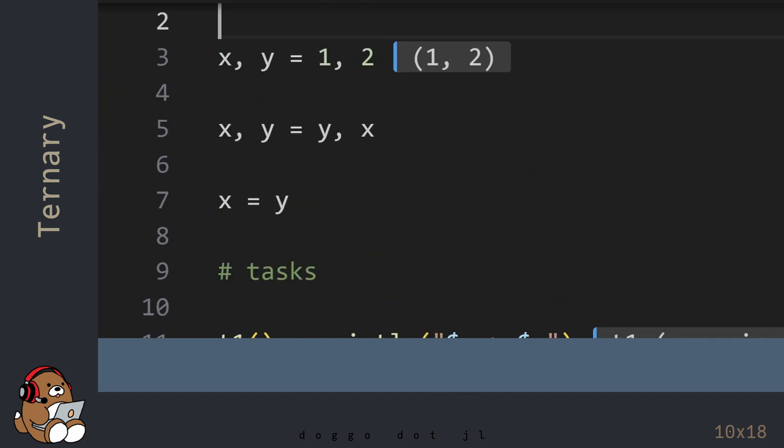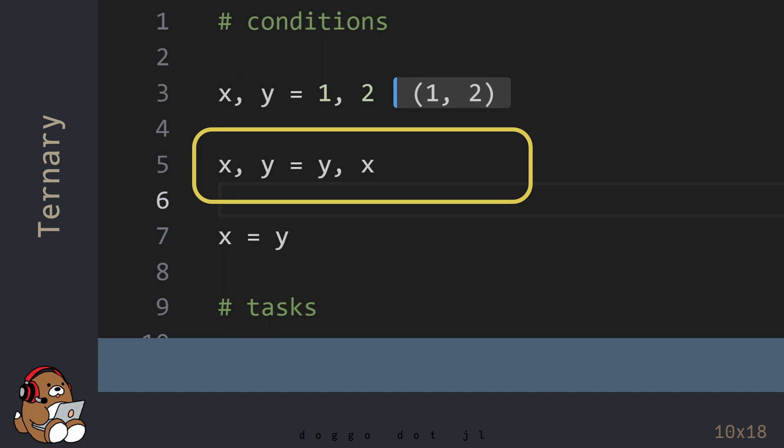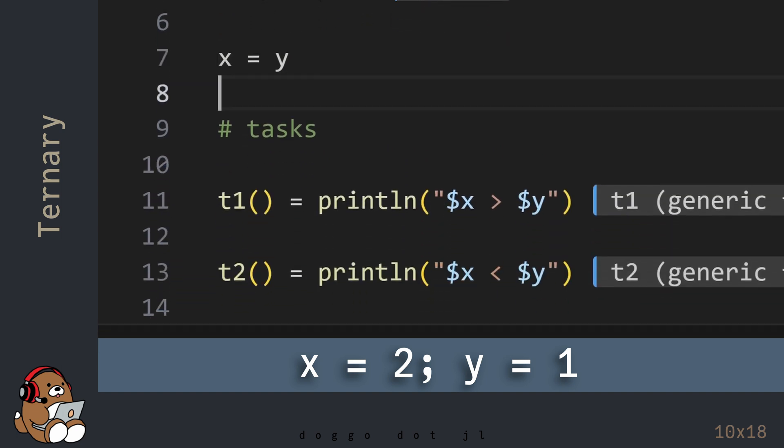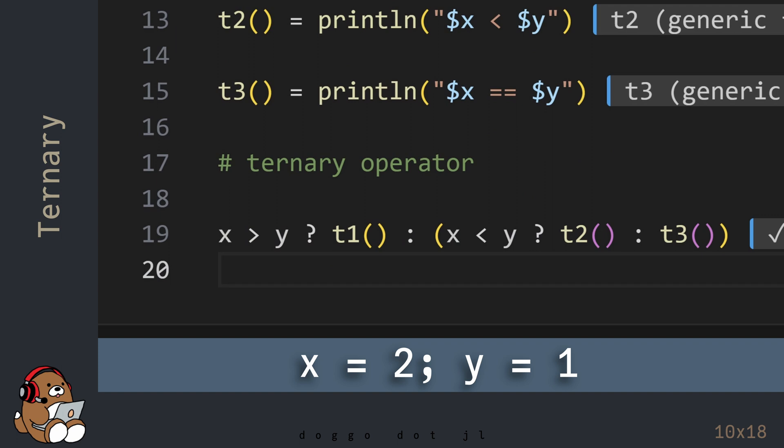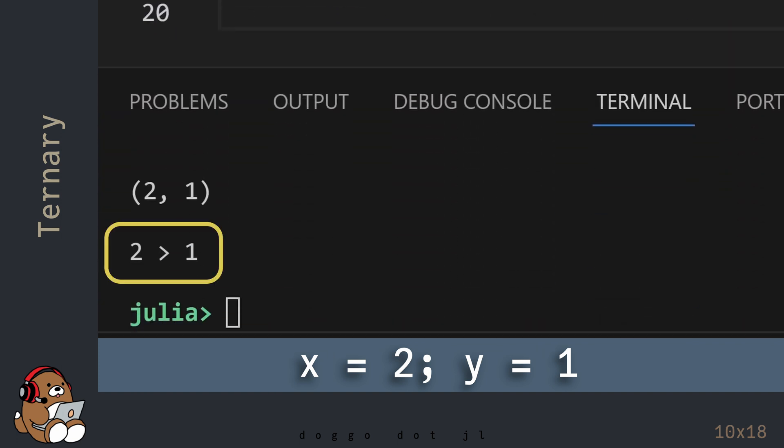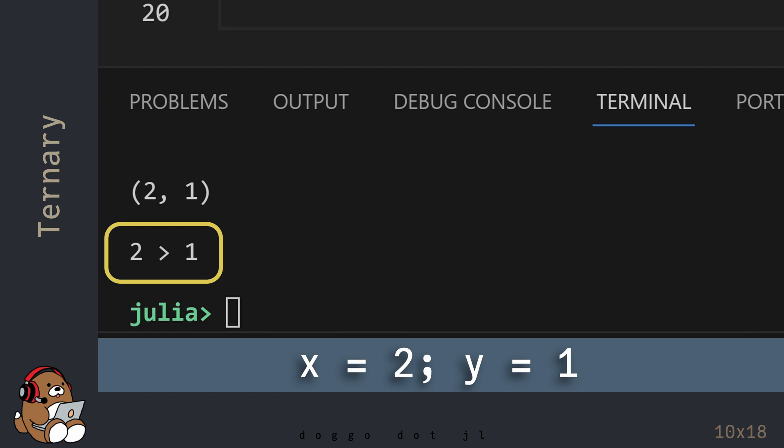Now let's go back up to the top of the code and swap the values between the variables X and Y. Now rerun your ternary operator code to see what happens. In the REPL, you'll see 2 is greater than 1. So the ternary operator works. It performs a different task based on a different condition, just like an if expression.